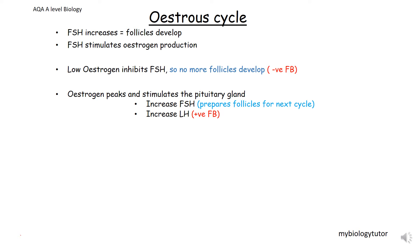There are two reasons for the increase in FSH. Apparently you don't need to know this for AQA, but what it does is it prepares the follicles ready for the next oestrus cycle if you don't get pregnant. Studies on animals show that if they haven't had this peak in FSH, the follicle hasn't been ready for the next cycle.